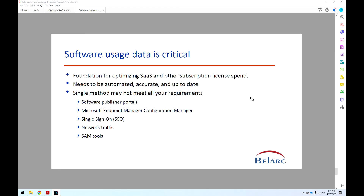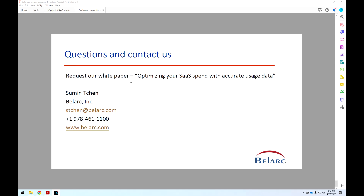In summary, the basis for optimizing your SaaS spend is actual software usage data. But in order for that to be practical, it needs to be automated — meaning no manual efforts — accurate, with no false positives, and up to date, available continuously. You don't want to wait six, nine, or 12 months, as the data becomes pretty useless by then. Of course, one method may not meet all your requirements, so focus on the method that gives you the biggest bang for the buck and then look at others. Thank you very much. We do have a white paper — simply send us an email and we'll send you a copy of 'Optimizing Your SaaS Spend.' Thank you.